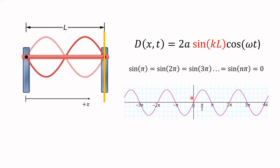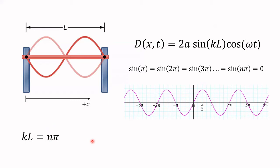So kL must equal an integer multiple of π, where N = 1, 2, 3, etc. This equation results from the boundary conditions — it's not true in general for an infinitely long string. If you solve for k, you get k_n = nπ/L. The wave number k is related to wavelength by k = 2π/λ, so combining these gives n·π/L = 2π/λ_n. There is a discrete set of allowable wavelengths, each labeled by the index n.